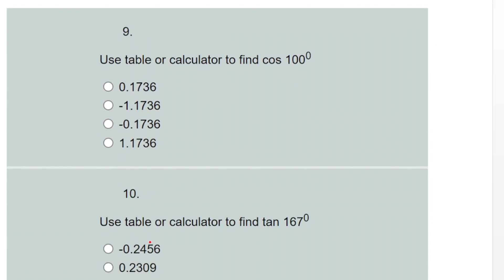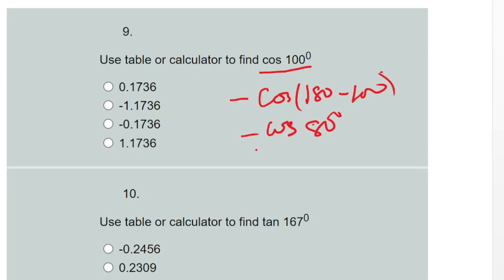Question nine: cos 100 degrees. 100 degrees is in the second quadrant, and cosine is negative there. So the answer is minus cos(180° − 100°), which is minus cos 80°. Using the calculator, cos 80° gives 0.1736, so the answer is minus 0.1736.